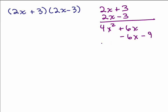-3 times 3 is -9. So what do we get here? We get 4x² - 9.